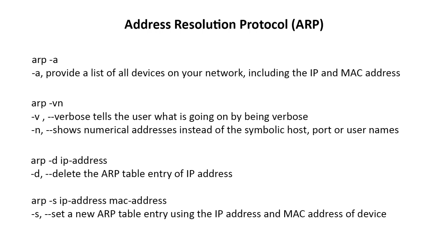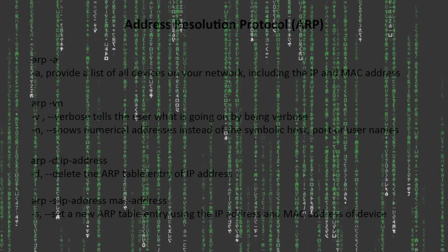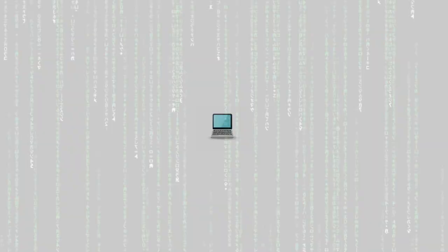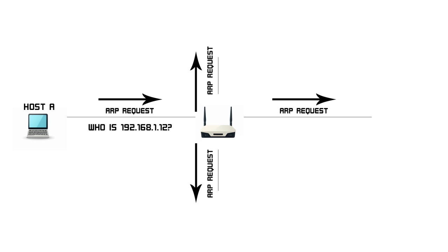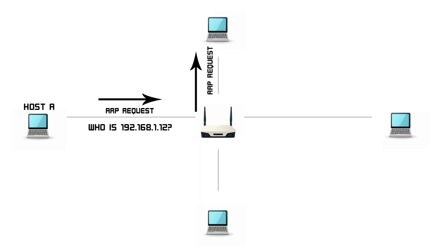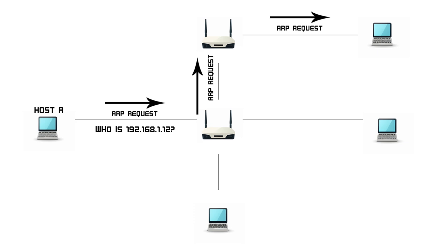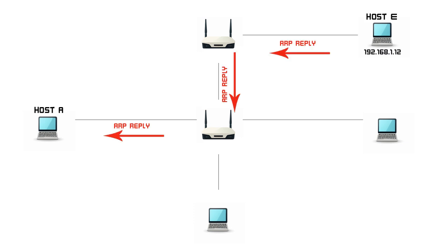Address Resolution Protocol can be used to map out neighboring MAC addresses to their respective IP addresses on a local area network using the Layer 2 ARP protocol. Host A sends out an ARP request asking all devices on the network which device has the MAC address that corresponds to a specific IP address. Only the device with the corresponding IP address will reply with its MAC address. All other devices will simply ignore the broadcast.